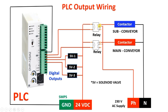The NO terminal of the first relay connects to one terminal of the sub conveyor contactor, and the NO terminal of the second relay connects to one terminal of the main conveyor contactor. The other terminal of both contactors connects to neutral. If a relay is on, its common and NO will close, giving supply to the contactor, which energizes and turns on the respective conveyor motor.